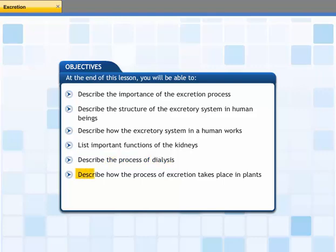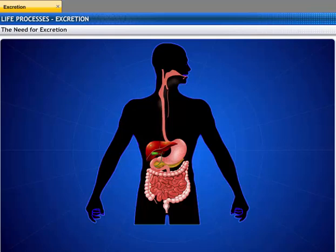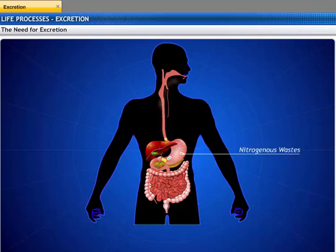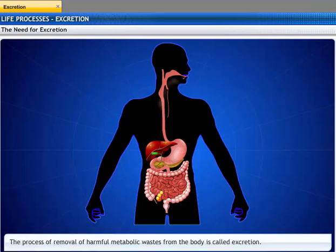You will also be able to describe the process of dialysis and describe how the process of excretion takes place in plants. All living organisms consume food to obtain nutrients and energy. The food is broken down into simpler molecules by the process of metabolism. These metabolic reactions create nitrogenous materials that are not required for the cells of the body and may even harm the body if they are not removed quickly. The process involved in the removal of these harmful metabolic wastes from the body is called excretion.